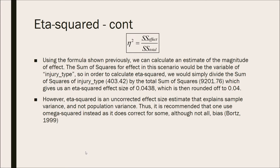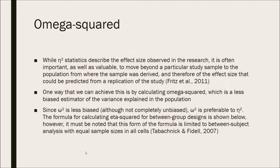However, eta squared is an uncorrected effect size estimate that explains sample variance and not population variance. Thus, it is recommended to use omega squared, as it does correct for some, although not all, of the bias. While eta squared can describe the effect size observed in the research, it is often important and valuable to move beyond a particular study to the population, and therefore becoming a parameter from where the sample was derived, so that the effect size could be predicted from a replication of the study. Omega squared is a less biased estimator of the variance explained in the population, and since omega squared is less biased, although not completely unbiased, it is preferable to eta squared.